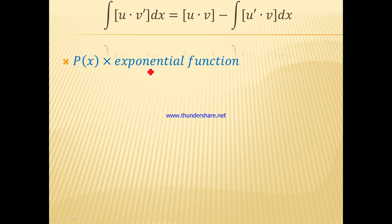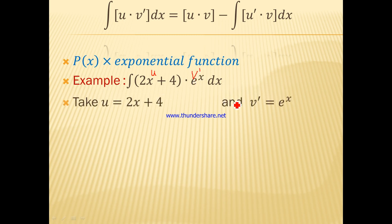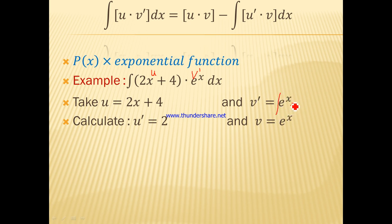Let's take the first example: polynomial times exponential. We want to calculate the antiderivative of (2x + 4)·e^x dx. Stop the video to try it yourself. We take u = 2x + 4 and v' = e^x. The derivative u' equals 2. The antiderivative v equals the integral of e^x dx, which equals e^x. We do not add the constant of integration at this step in integration by parts.